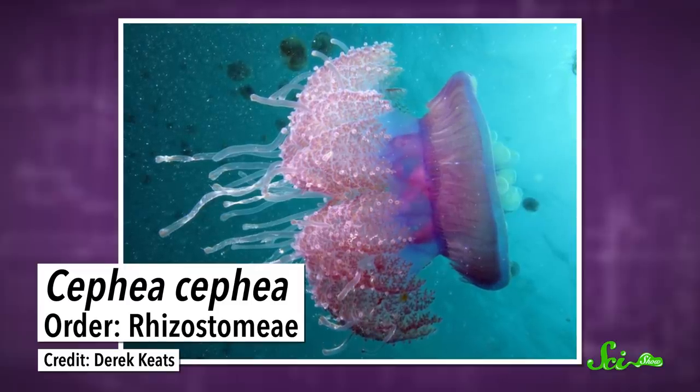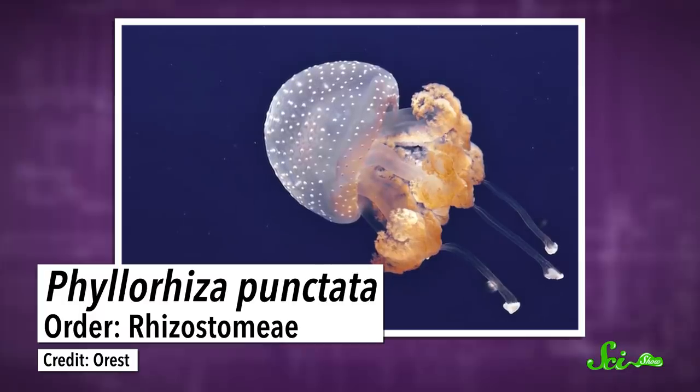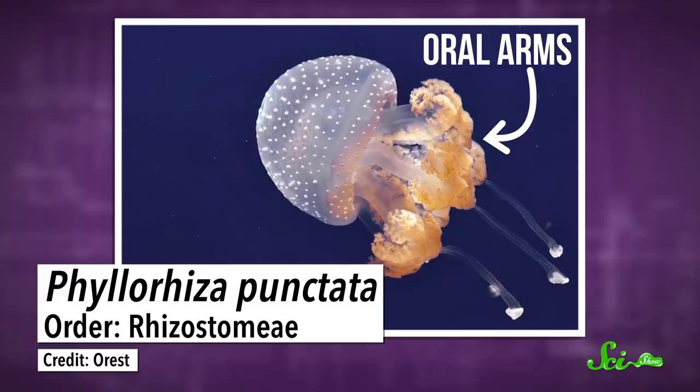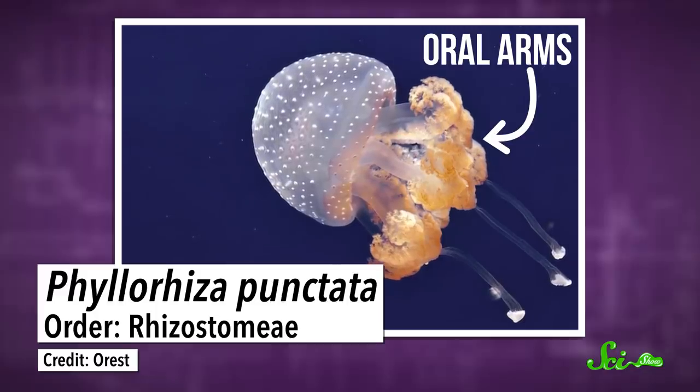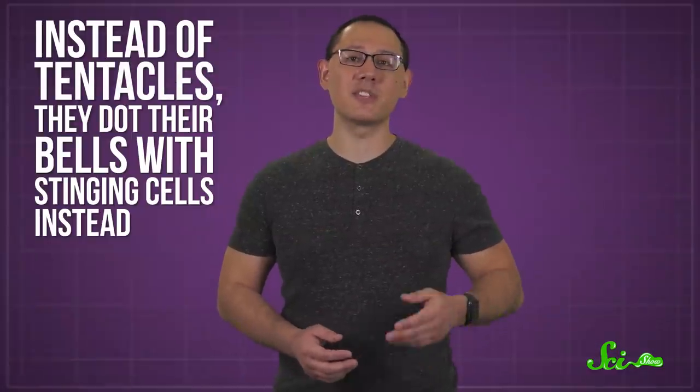Some rhizostomes have ditched tentacles altogether. Rather than tentacles, these jellies catch and eat their prey using oral arms, specialized appendages that help them catch food and move it to their mouths. And it turns out we also see oral arms in deep-sea species of Ulmaridae. Then, instead of tentacles, they dot their bells with stinging cells instead.